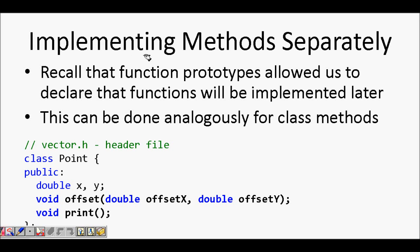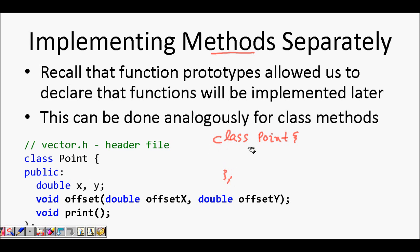In this lecture we will learn about implementing methods separately in a C++ class. When we declare a class — for example a class named Point — we open a brace and close a brace, and inside that we write our data members and member functions.